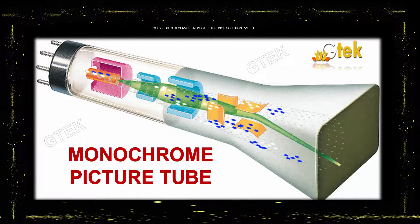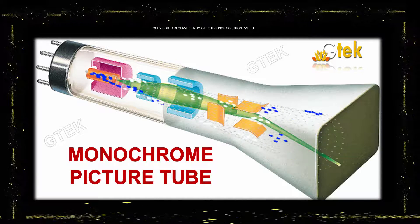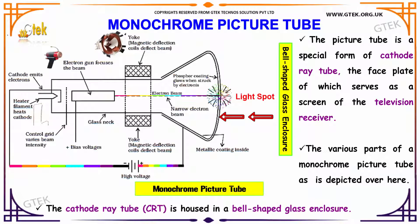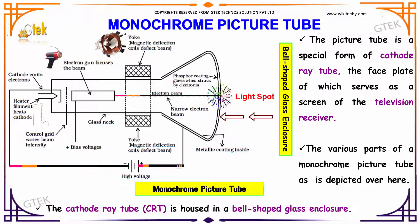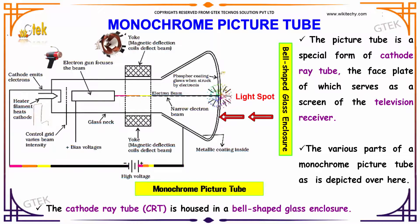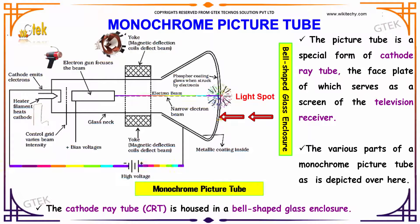This is about the monochrome picture tube. Here is a schematic diagram of a monochrome picture tube. The picture tube is a special form of a cathode ray tube, the face plate of which serves as the screen of the television receiver. The various parts of the monochrome picture tube are depicted here.